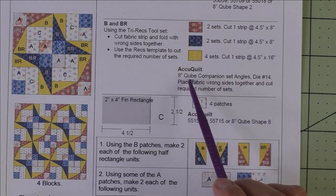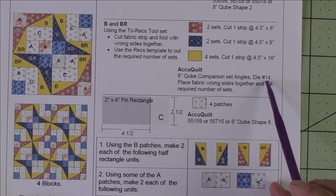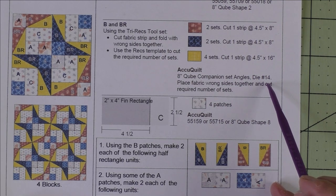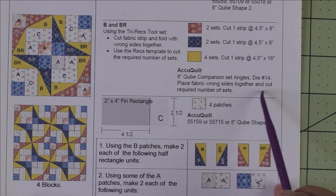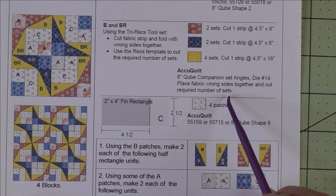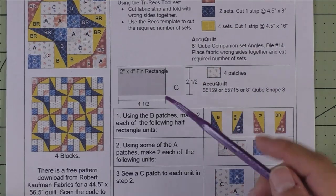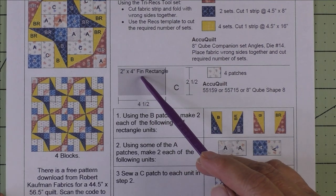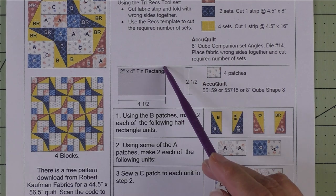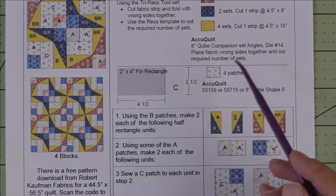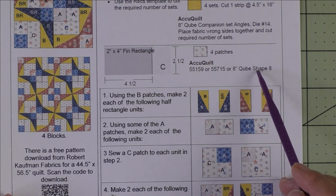If you have the AccuQuilt 8 inch cube companion angles, you can use die 14 for these cuts. Place the fabric wrong sides together and cut the required number of sets. Patch C is a 2 inch by 4 inch finished rectangle — cut 4.5 by 2.5 inches — and you'll need four patches from the background fabric.